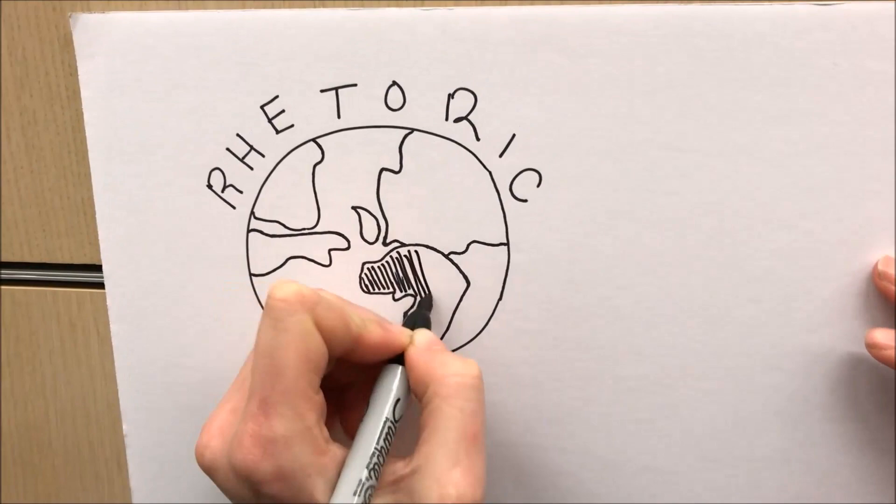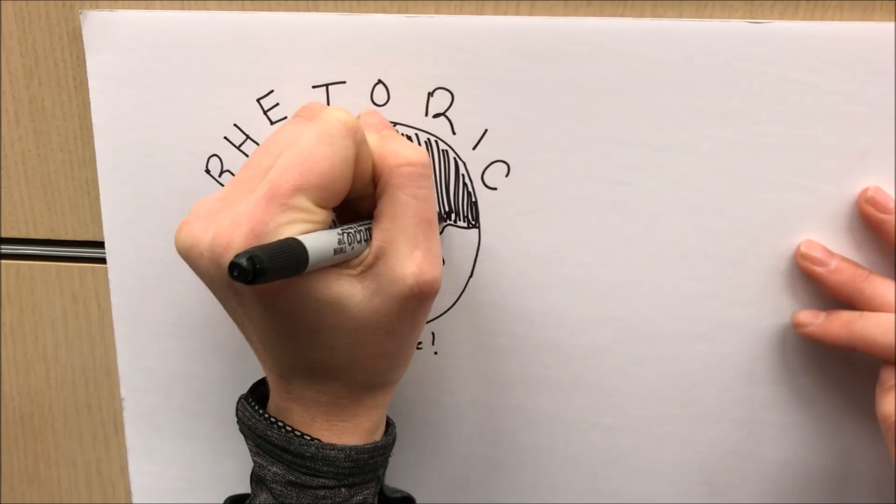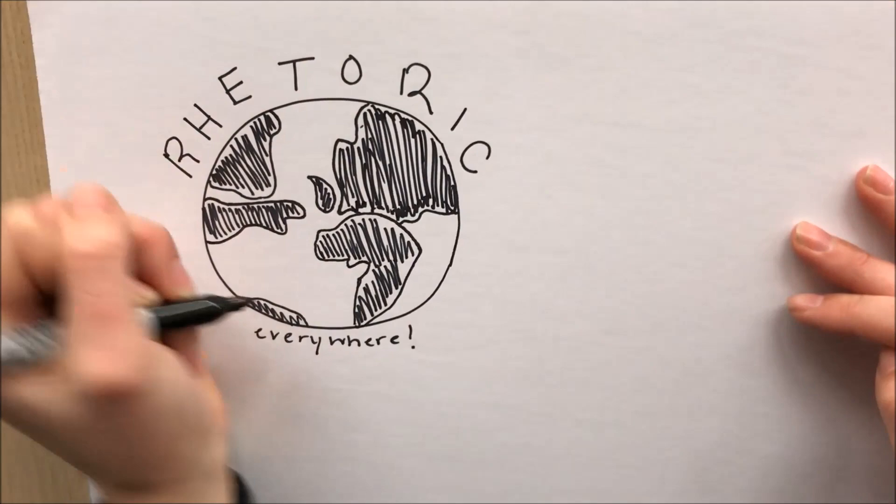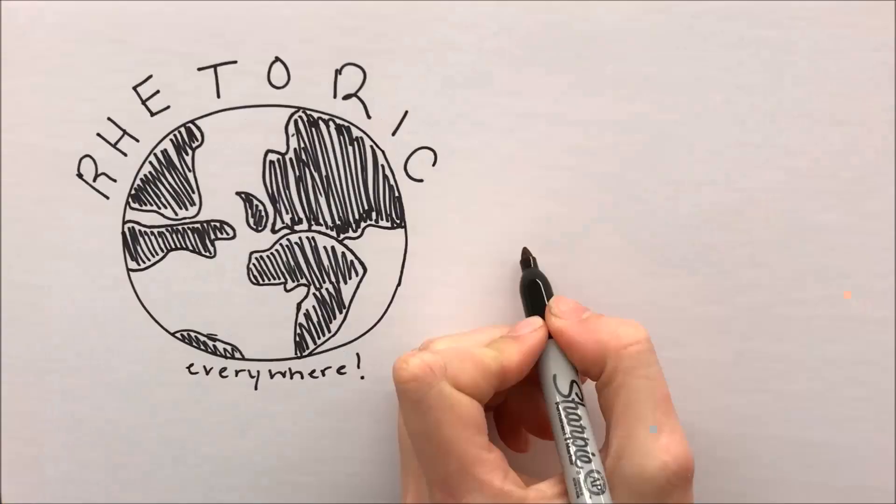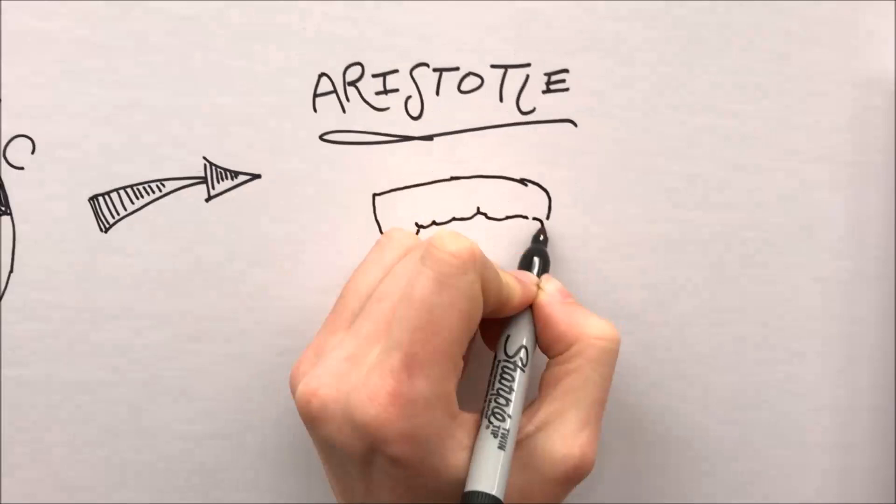In this video, we want to show you how rhetoric, which falls under the umbrella of higher order concerns, can have more of an impact on your writing and speaking than elevated language and perfect grammar, otherwise known as lower order concerns. Learning these rhetorical tools can empower you as a writer.